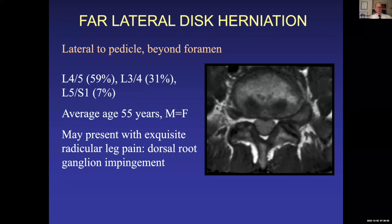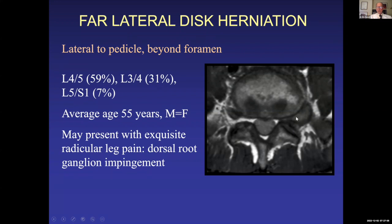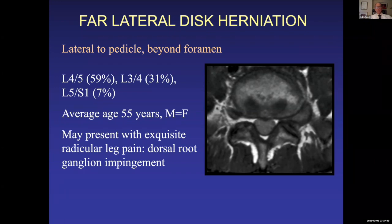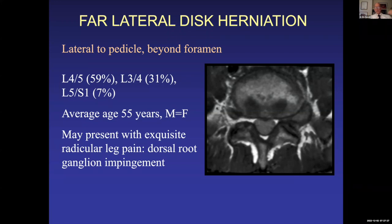Far lateral herniations obliterate the fat around the root, which you can see normally on the other side. These are more common at L4-5 and L3-4 than at L5-S1, probably because of greater mobility higher up. They tend to occur in the 50s, more in men than women. The dorsal root ganglion lives in that area, so these may be associated with exquisite radicular pain.